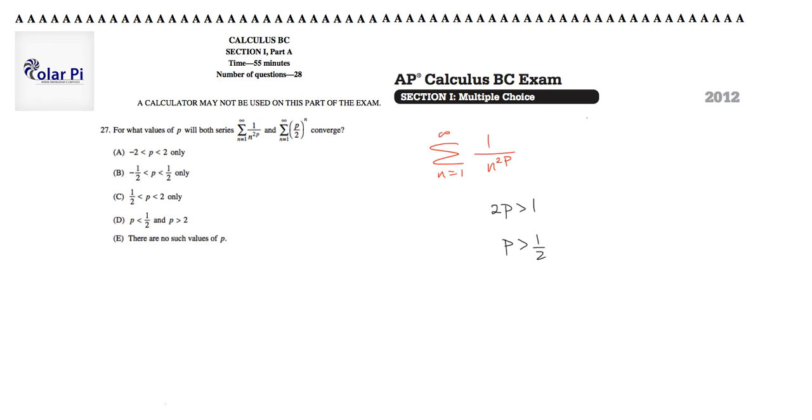Okay, nice. So then let's consider this series in isolation also. That series in isolation is this series, which is n equals 1 to infinity of p over 2 to the n. This is clearly a geometric series.